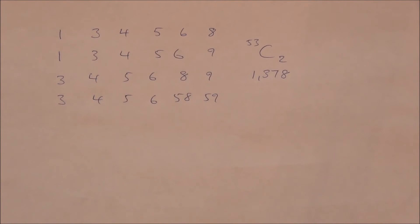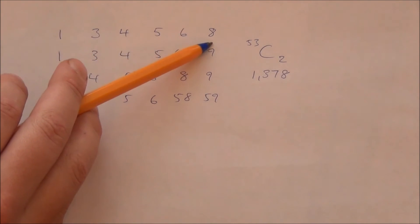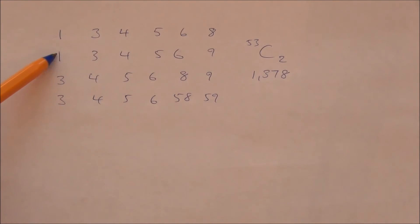And, in fact, most of the numbers also have this 53 choose 2, because every time we shift 1 to the right, we lose a number at this end, and we gain a possible number we can add at this end.